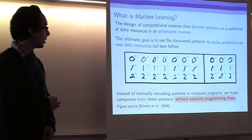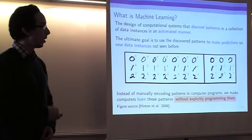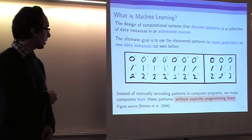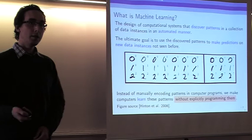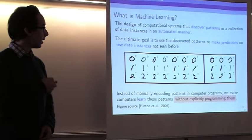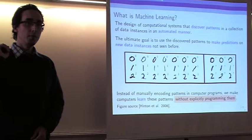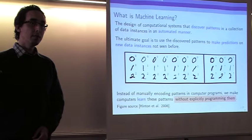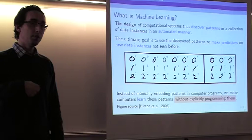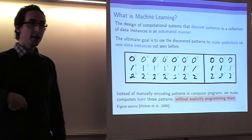For example, all data instances with the same label '0' have similar patterns — a cluster of white pixels in the center, a ring of black pixels around that cluster, and white pixels outside the black ring. That pattern can be used to make predictions in the test set. So instead of manually writing a computer program that looks for that pattern by specifying it directly, what we are going to do is just let the computer program identify the patterns itself and then use those patterns to make predictions.